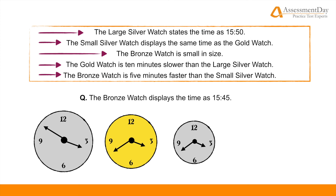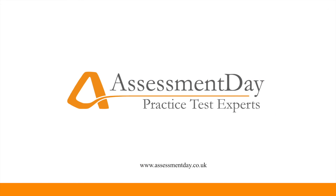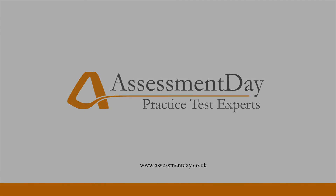And finally, the last two premises involving the bronze watch. The bronze watch is small in size and is five minutes faster than the small silver watch. In this question, size is not our concern, but time is. Five minutes faster than the small silver watch at 1540 is 1545. This means that our question statement is true. Thank you for watching this video tutorial. We hope it's been helpful. Best of luck with your test practicing here at Assessment Day.